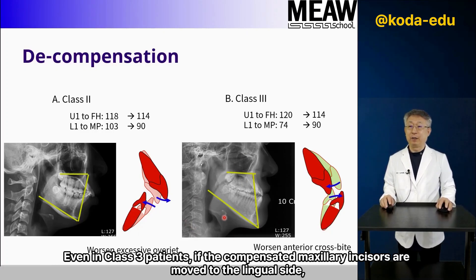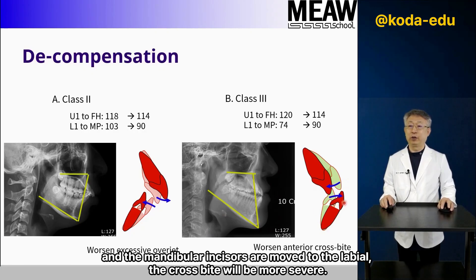Even in Class 3 patients, if the compensated maxillary incisors are moved to the lingual side and the mandibular incisors are moved to the labial, the crossbite will be more severe.